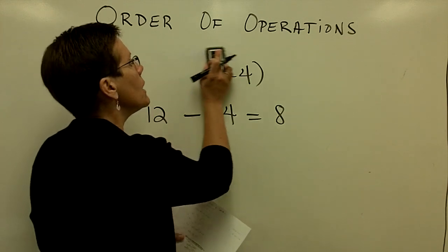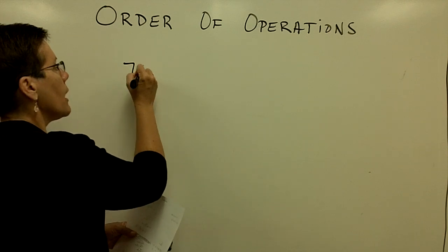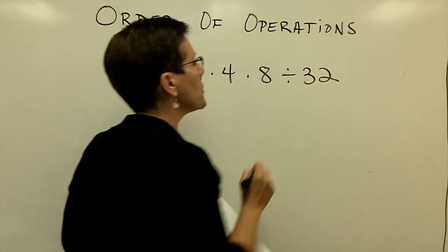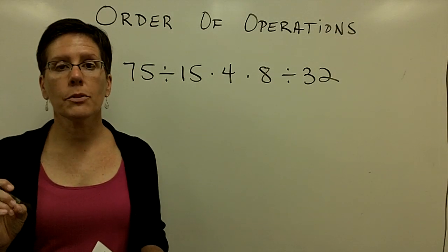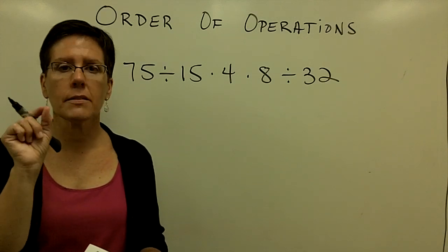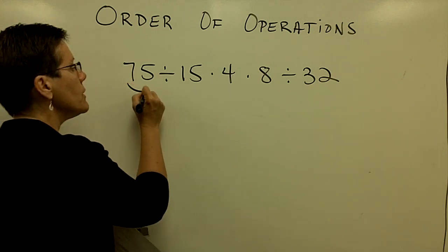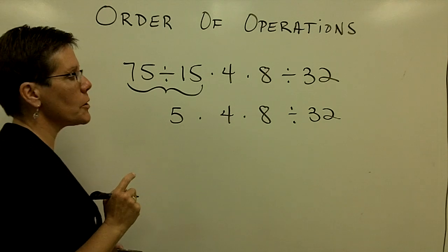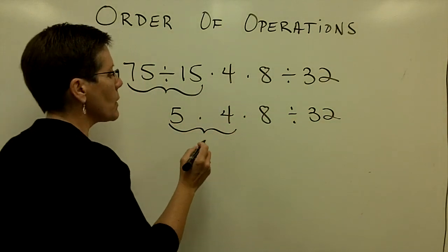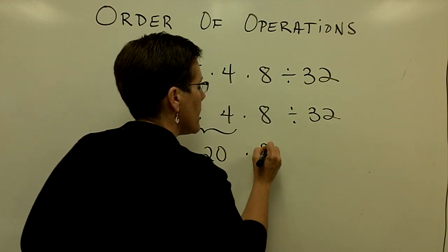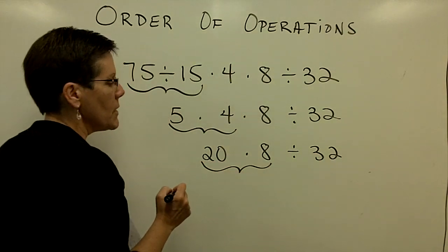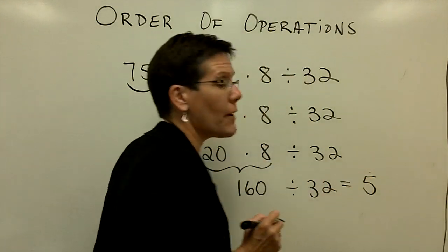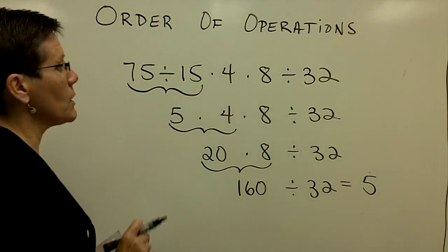Let's look at a problem that has a lot of multiplication and division: 75 divided by 15, times 4, times 8, divided by 32. Please be very careful working from left to right, because I do not multiply first just because I say 'multiply and divide' — I work from left to right. So 75 divided by 15 is 5. Then 5 times 4 is 20. Then 20 times 8 is 160. And finally 160 divided by 32 gives us 5. Work from left to right when you have just multiplication and division.